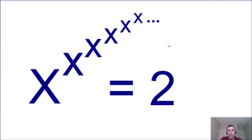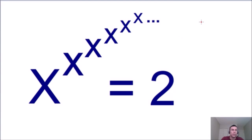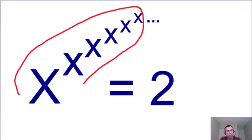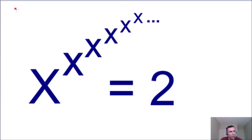The answer is yes, we can solve this equation for x. There's actually a trick we can use to solve it quite easily. Let's say that the entire infinite exponential tower is equal to y. So if all of this equals 2, then y is also equal to 2. Now, since the full infinite tower equals y, the exponent portion on top also equals y — because it's exactly the same infinite structure.